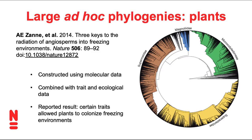Here's another example — a tree for plants. This paper also presented a comparative study looking at what traits allowed plants to colonize colder environments, moving into areas of the world where there's frost in wintertime. This tree was based on molecular data, and onto that data were superimposed traits and ecological data.